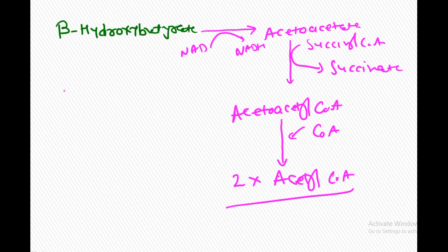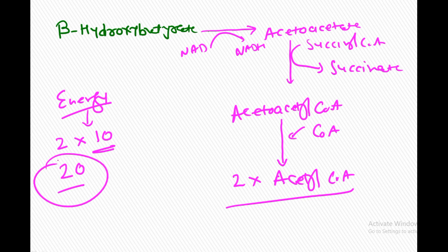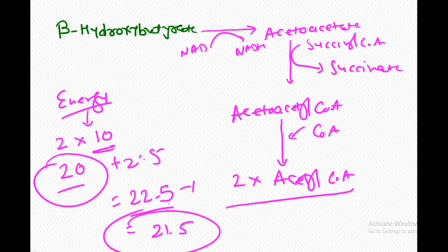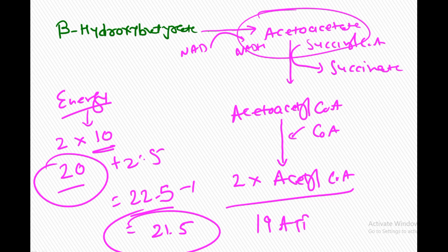What is the energy yield from ketolysis? Two molecules of acetyl-CoA each produce 10 ATP in the TCA cycle, giving 20 ATP total. Plus one NADH going to the electron transport chain produces 2.5 ATP, giving 22.5 ATP. One ATP is utilized, so we get 21.5 ATP from beta-hydroxybutyrate. From acetoacetate, we subtract 2.5, giving 19 ATP. This ATP is very important for the brain in fasting condition.